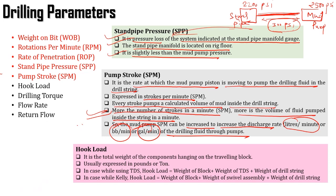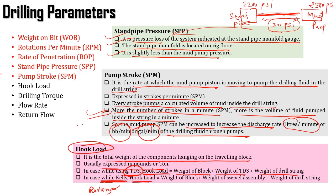Coming to hook load: it is the total weight of the components hanging on the traveling block, usually expressed in pounds or tons. When using a top drive system, hook load equals weight of block plus weight of top drive system plus weight of drill string. When using a kelly — that is a rotary drive system — hook load equals weight of block plus weight of swivel assembly plus weight of drill string, because when using a kelly, we also use a swivel.